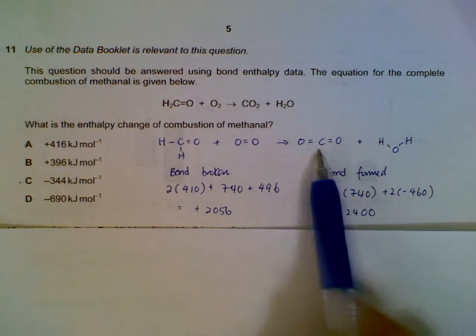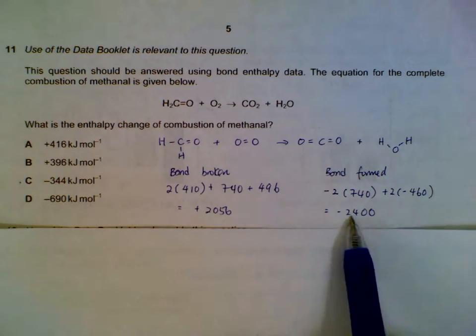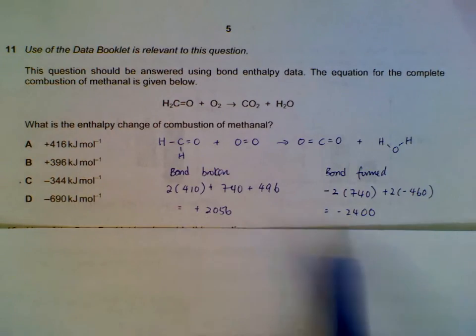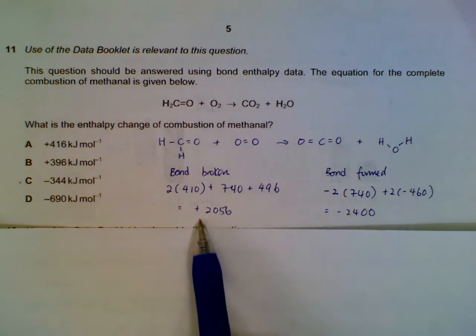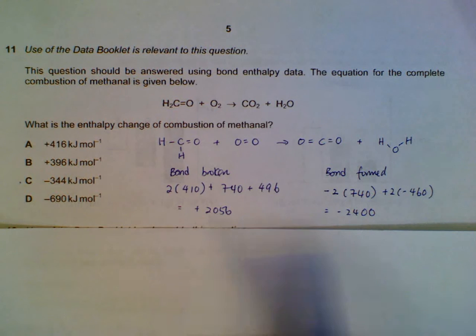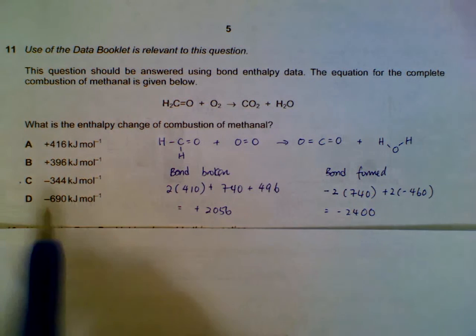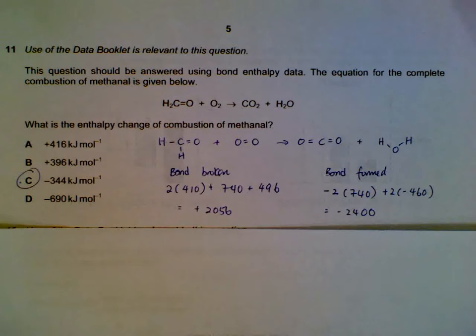Then we put them together: plus 2056 minus 2400 gives us minus 344. That is the enthalpy change of this reaction, which is also the enthalpy change of combustion.